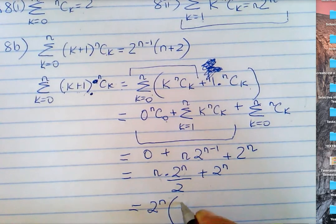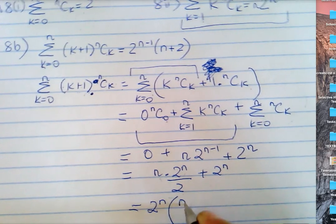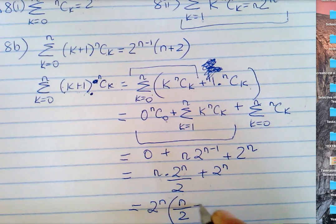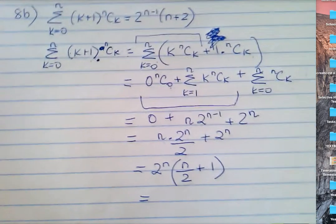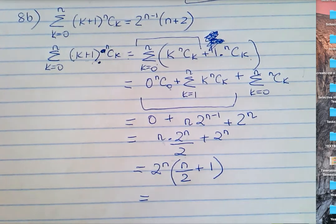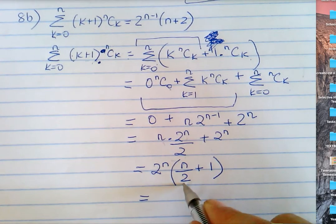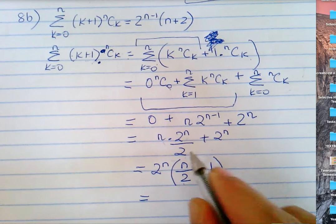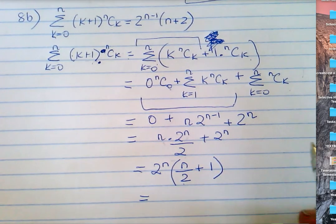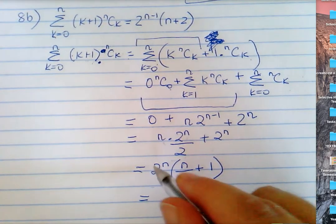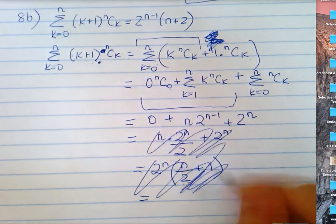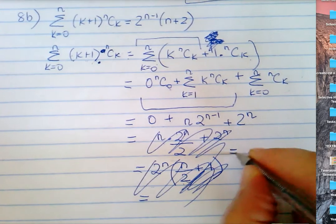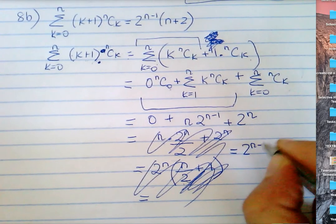What do you get? n times 2 to the n over 2, plus one. They want 2 to the n minus one out the front, which I can do. Isn't that the same as 2 to the n minus one times n plus 2?